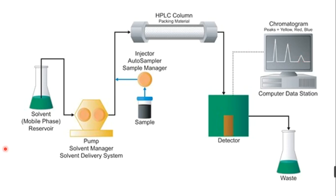The pump pushes liquid through the column inlet and outlet. On the way to the column, there is an injector — also called sample loader, auto sampler, or sample manager. Samples are loaded using a Hamilton syringe: approximately 0.3 ml for analytical HPLC, and for semi-preparative or preparative HPLC the volumes range from 0.2 ml to 2 ml, with preparative HPLC handling up to 100 ml.